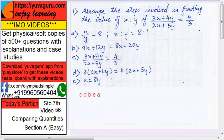So next step will be this: 3 on this side, 3x plus 4y equals to 4 into 2x plus 5y on this side. That's d. Then next, solve this bracket. 3 times 3 is 9, 3 times 4 is 12, 4 times 2 is 8, and 4 times 5 is 20.